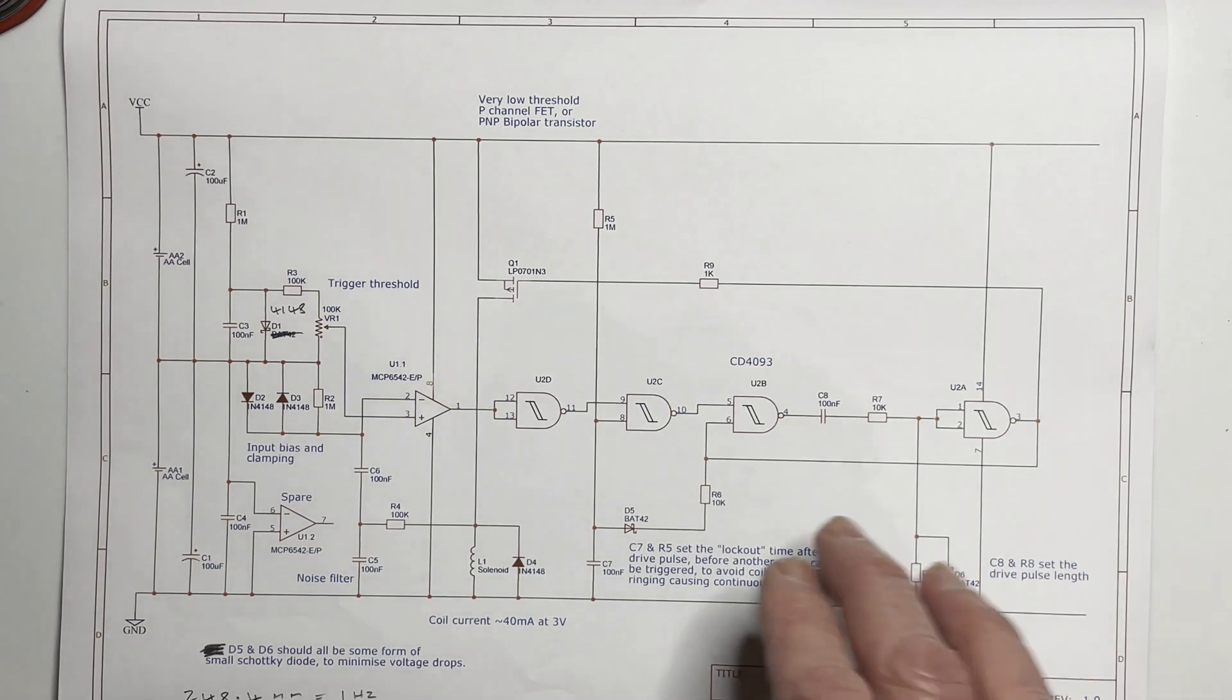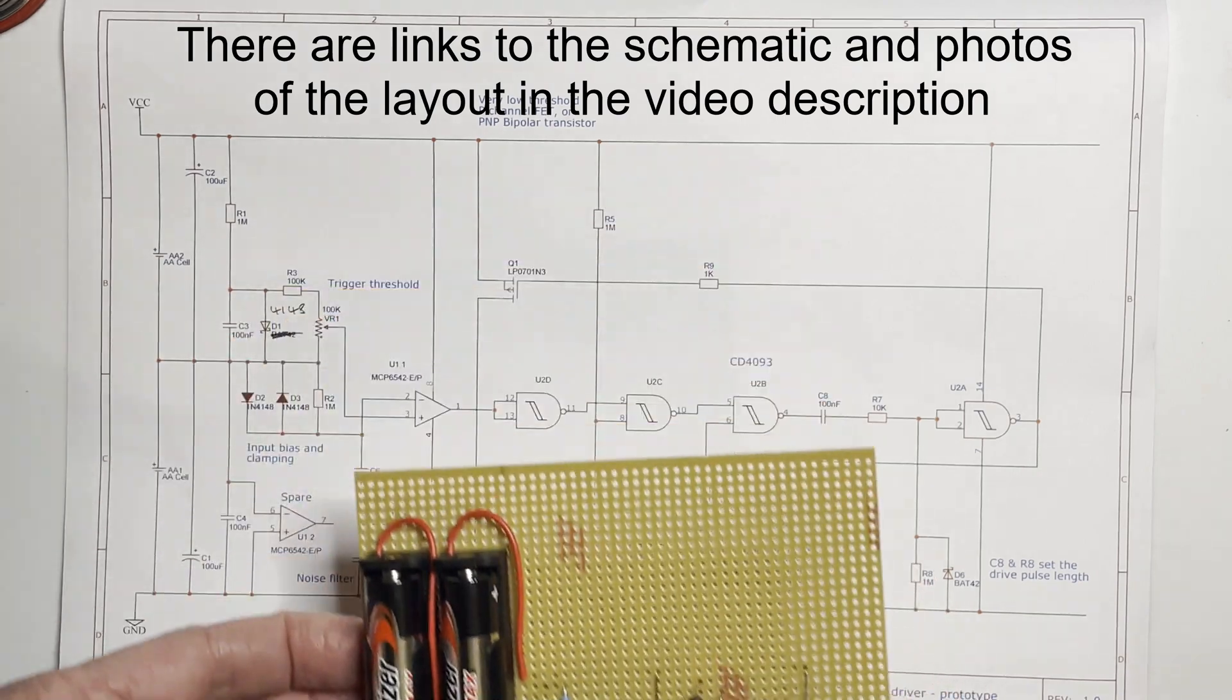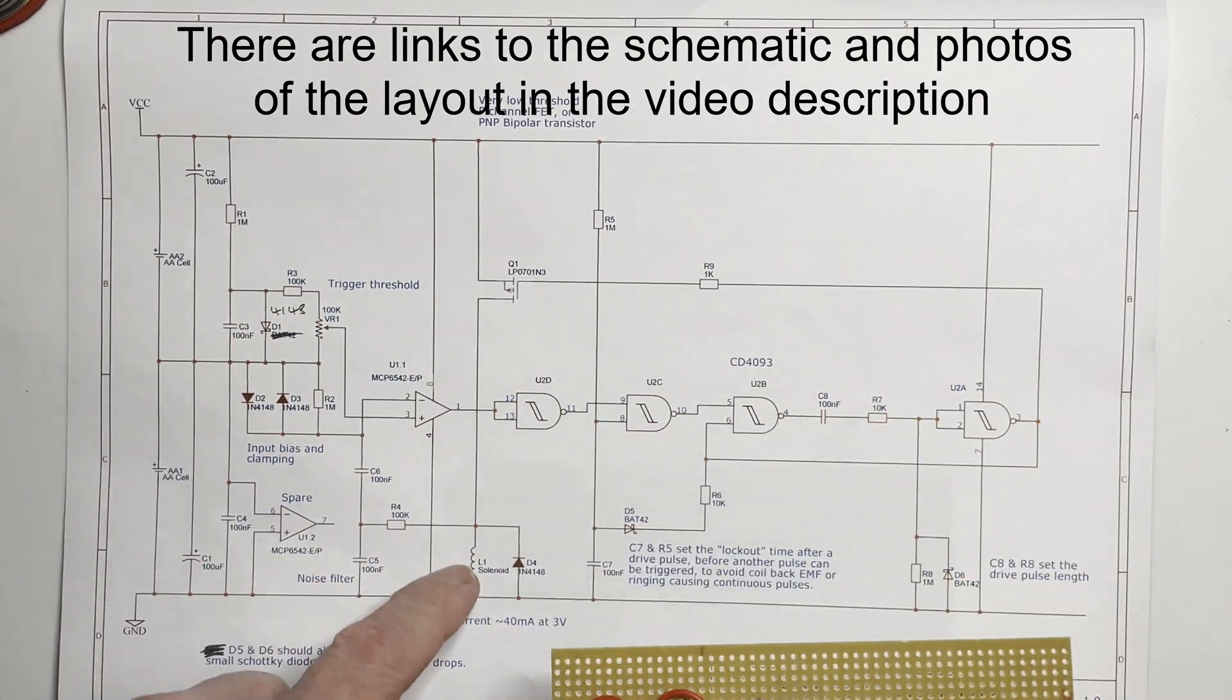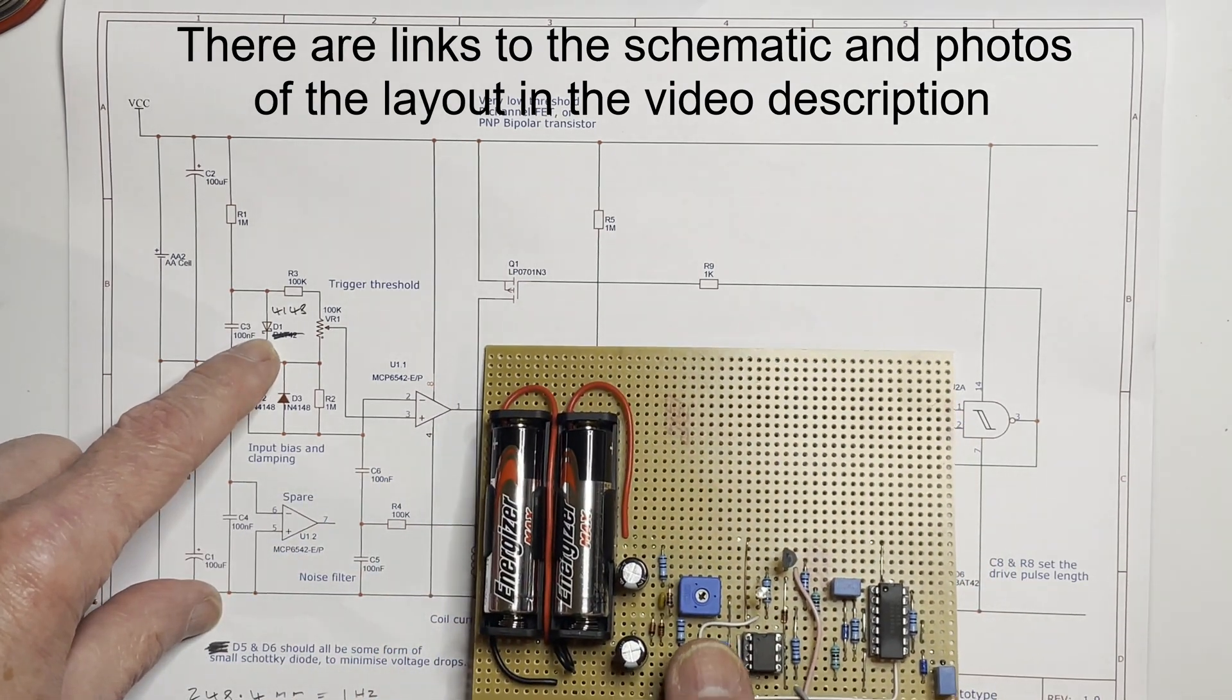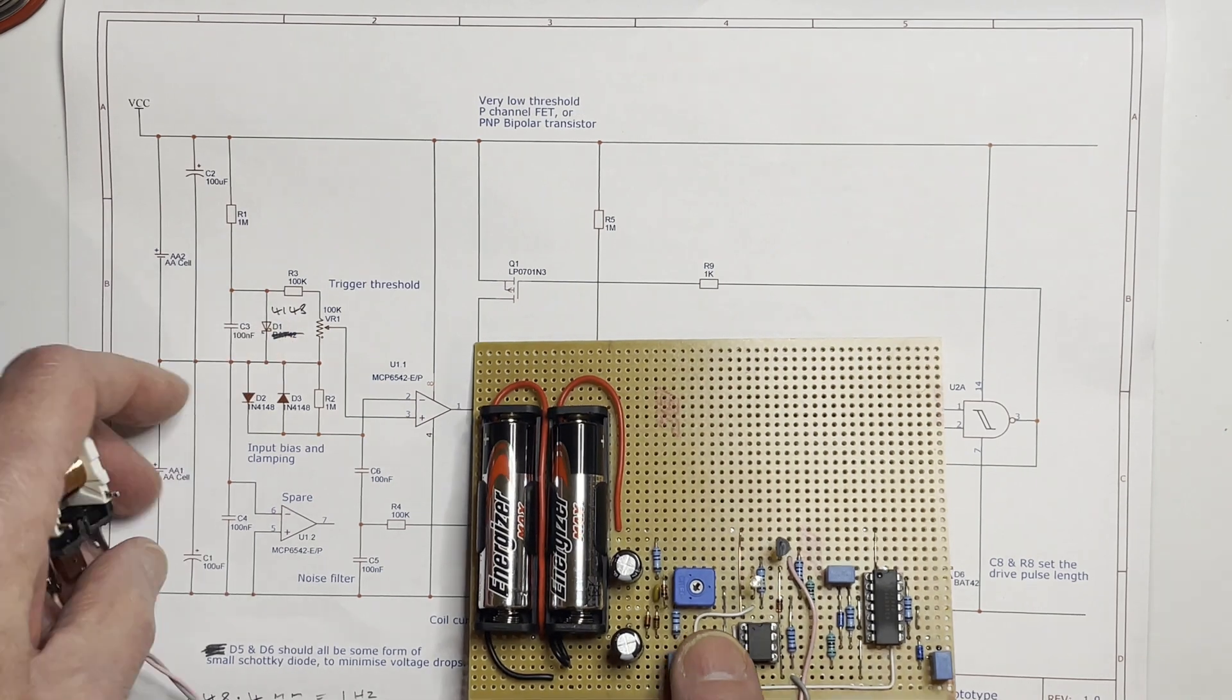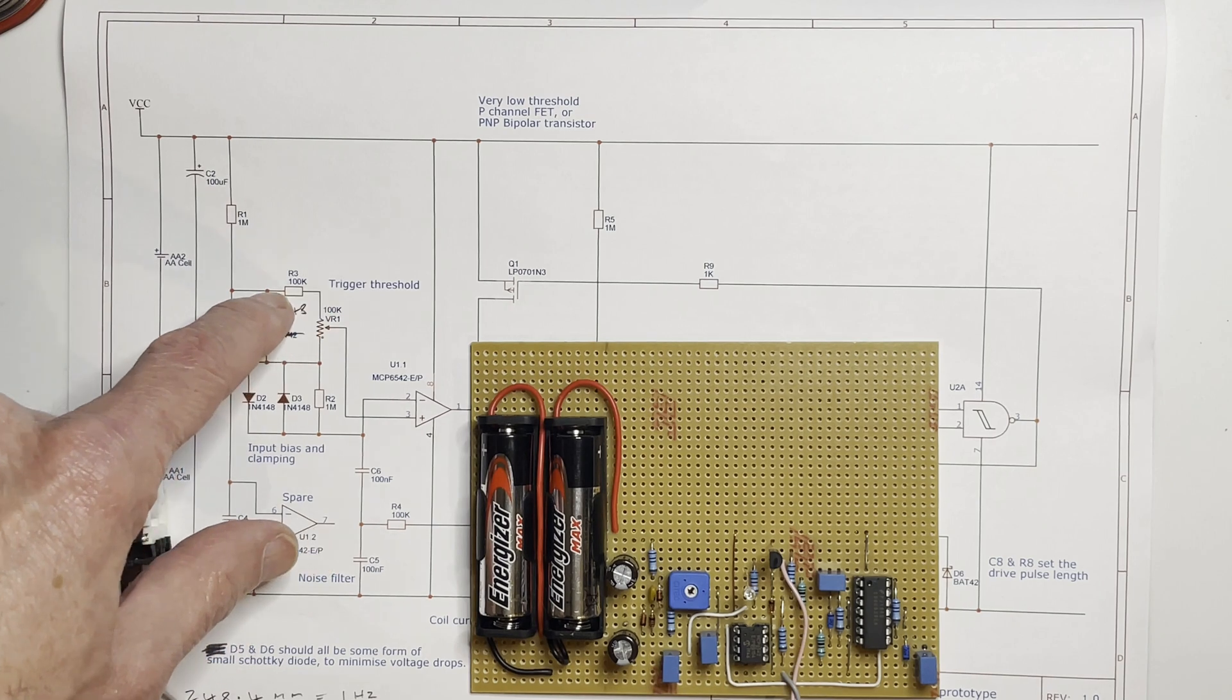Okay, so this is the circuit diagram that matches how the prototype is built. There's only one change from the original concept and that is that diode. It turns out it can't be a Schottky after all, it needs to be a normal diode to give a reasonable voltage drop. Oh, and that resistor doesn't exist, that's linked out.